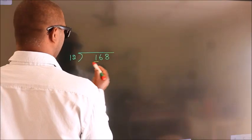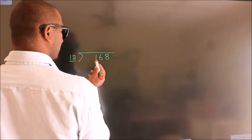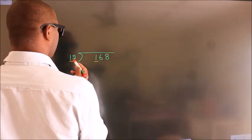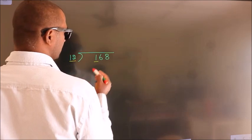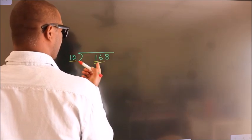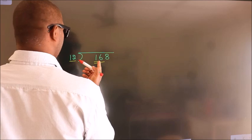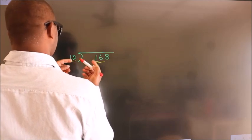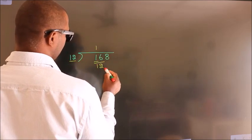Here we have 1, here 12. 1 is smaller than 12. So we should take 2 numbers: 16. A number close to 16 in the 12 table is 12 once 12.